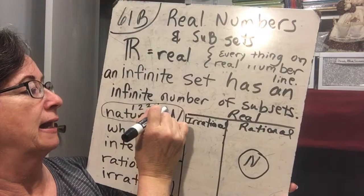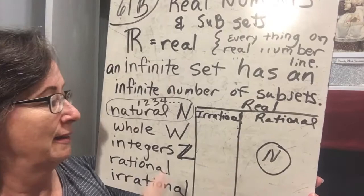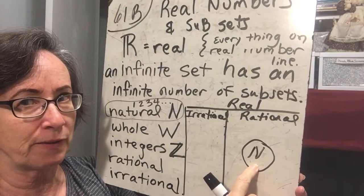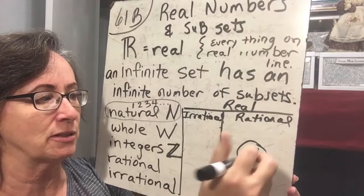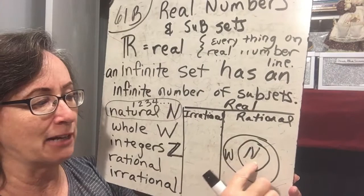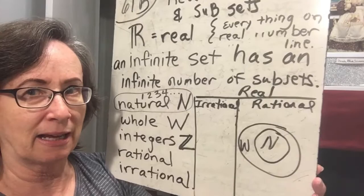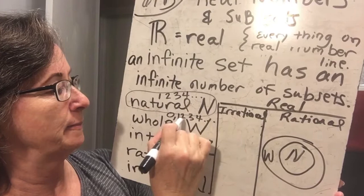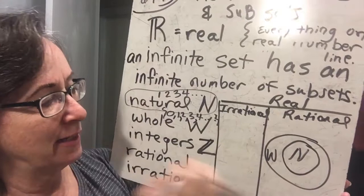Whole numbers are represented by W. Whole numbers are all of the natural numbers plus zero — so {0, 1, 2, 3, 4, 5, ...}. Since natural numbers is just {1, 2, 3, 4, 5, ...} and whole numbers is {0, 1, 2, 3, 4, 5, ...}, isn't the natural set a proper subset of the whole number set? The natural numbers fit inside the whole numbers.